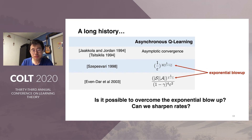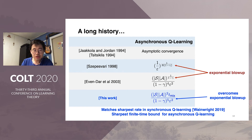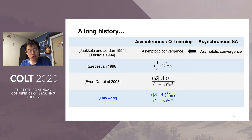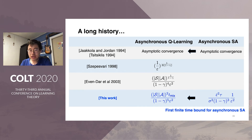Is it possible to overcome the exponential blowup, and can we sharpen the rates? We answer these questions in the affirmative. In our work, we provide a bound for asynchronous Q-learning which overcomes the exponential blowup. Further, our bound matches the sharpest rate in synchronous Q-learning by Wainwright, and is also the sharpest known bound for asynchronous Q-learning. Some prior work proves bounds for asynchronous Q-learning by proving bounds for the more general class of asynchronous stochastic approximation schemes, while other work only focuses on the special case of Q-learning. In our work, we prove bounds for asynchronous Q-learning by proving bounds for the more general class of asynchronous stochastic approximation. To the best of our knowledge, this is the first such finite time bound for asynchronous stochastic approximation.